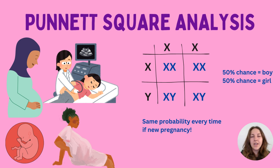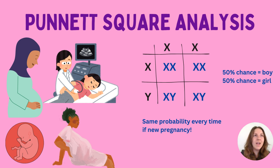So speaking of GCSE, how do we use Punnett square analysis to determine if an individual will have a male or female child with their partner? For example, we have a man (XY) and a woman (XX), and we're looking at the probability of them having a boy or a girl. In each case it's going to be a 50/50 chance — regardless of the age of an individual or their ethnicity, it's always going to be 50/50.